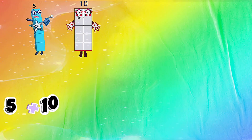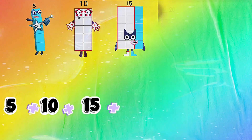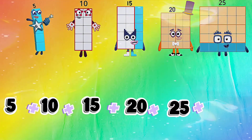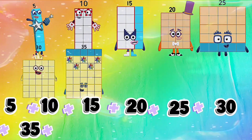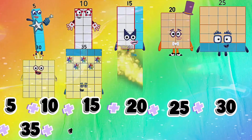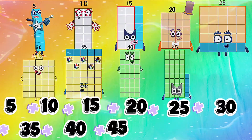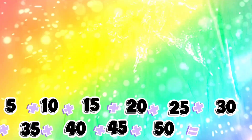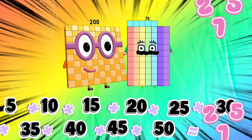5 plus 10 plus 15 plus 20 plus 25 plus 30 plus 35 plus 40 plus 45 plus 50 is equals to 275.